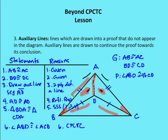We were given BA ≅ AC, given BD ≅ DC, and drew auxiliary line AD which is congruent to itself. By Side-Side-Side, the two triangles are congruent. Therefore, by CPCTC, angle ABD is congruent to angle ACD. This demonstrates how an auxiliary line can be added to a diagram in order to prove what we're required to prove.